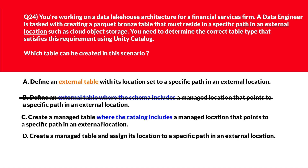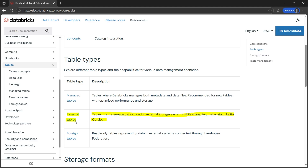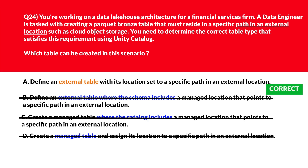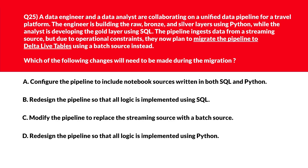We'll move to C. C says create a managed table where the catalog includes a managed location that points to a specific path in an external location. Catalog-level managed location governs managed tables, not external table placement — wrong choice. Option D says create a managed table and assign its location to a specific path in an external location. A managed table cannot define location manually — it inherits from schema or catalog. If you look at the official documentation, external tables reference data stored in external storage systems while managing metadata in Unity Catalog — that's what is required. Option A is the right answer.